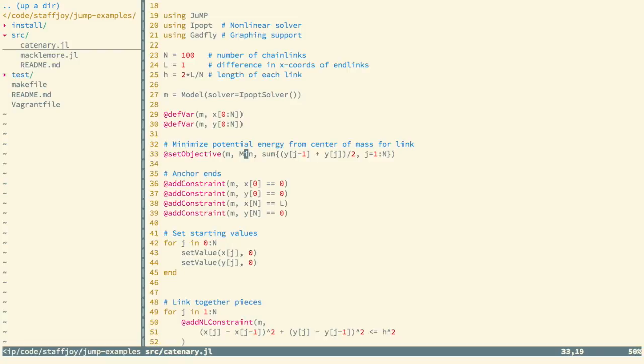Basically what we do is we are summing across the center of mass for every link. We're assuming the center of the link is its center of mass. Then we're summing its potential energy here. We can use this sum macro here that's available in Julia, which makes it quite straightforward to do this.